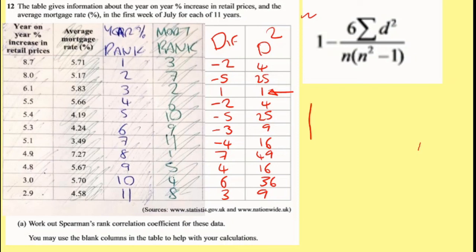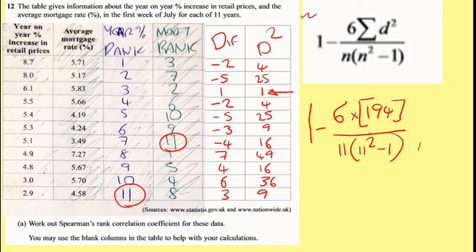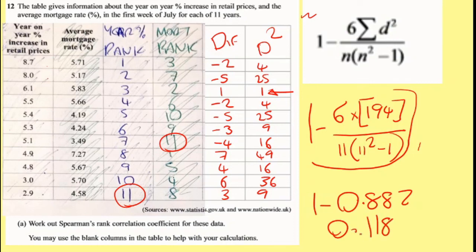Now I've got all the information I need to work this formula now. So it's 1 minus 6 times, and I need to add up all of my d squareds, which happens to be 194. All of this. Now n is the amount of numbers we have, and you can always look at the biggest number in your rank which is going to be 11. So I've got 11, which is 11 squared minus 1. Essentially we can type this all up and type it all into your calculator, but make sure you do write this little bit here. So I end up doing 1 minus 0.882, which is 0.118. I'll work there for that.